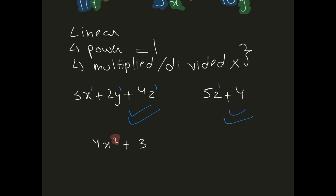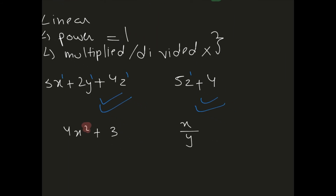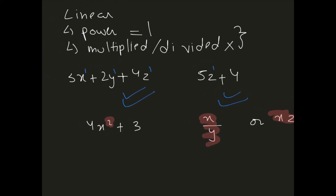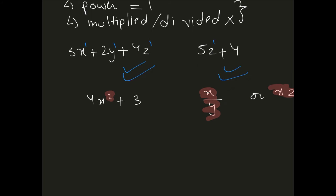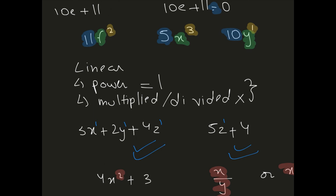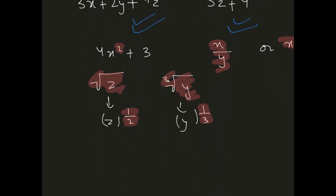If we have x divided by y, or xz plus 5, these are also not linear equations because the variables are being divided or multiplied by each other. Also, if a variable is inside a square root or cube root — like root z or cube root y — these are not linear either, because that means z has a power of one-half and y has a power of one-third. Since the power is not 1, they do not fulfill the conditions for a linear equation.